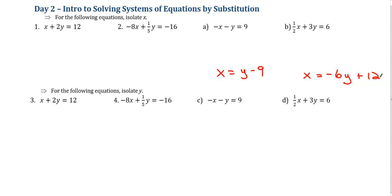If you hit pause and practiced, you should have gotten x equals y minus 9 and x equals negative 6y plus 12. All right. Well, let's practice this by getting y by itself. So if you look, these are the same equations. I'm just trying to see, sometimes getting x by itself is easy, other times getting y by itself is easier.